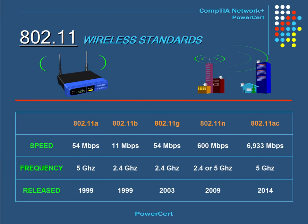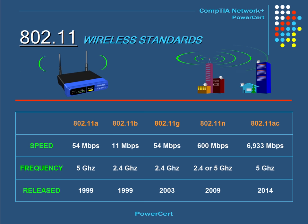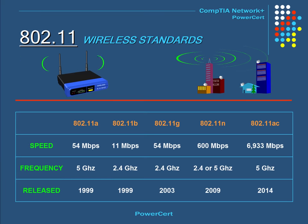Here is a chart of the speed, frequencies, and release year for each wireless standard. The first wireless standard was 802.11a, which came out in 1999. The latest standard is 802.11ac, which was released in 2014.